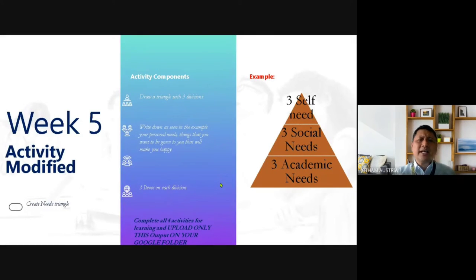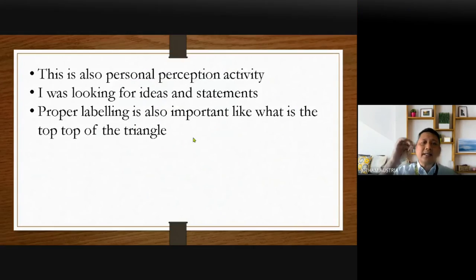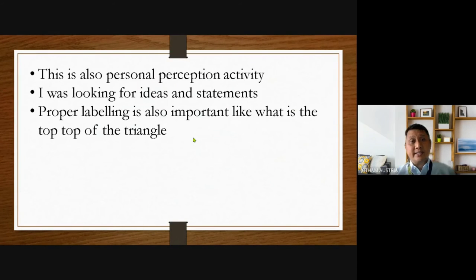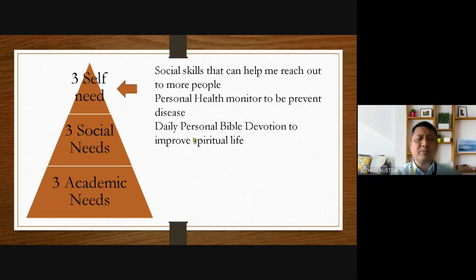The last activity is the triangle. Three self needs, three social needs, and three academic needs — you draw a triangle and write three items on each division. This is also a personal perception activity. I was looking for ideas and statements. Proper labeling is also important. Here's an example — see, it's more detailed. Three self needs: 'Social skills that can help me reach out to more people.' 'Personal health monitor to prevent disease.' 'Daily personal Bible devotion to improve spiritual life.' Instead of just putting one or two words, express the idea so that the teacher will understand what you're saying.